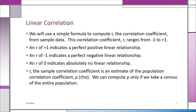I'm going to show you a simple formula to compute R. R is the correlation coefficient, and R ranges from minus one to plus one. If you get an R of plus one, that means it's a perfect positive linear relationship—all the points are on a straight line. An R of minus one indicates a perfect negative, or inverse, linear relationship. An R of zero indicates there's no linear relationship between the two variables you're examining.